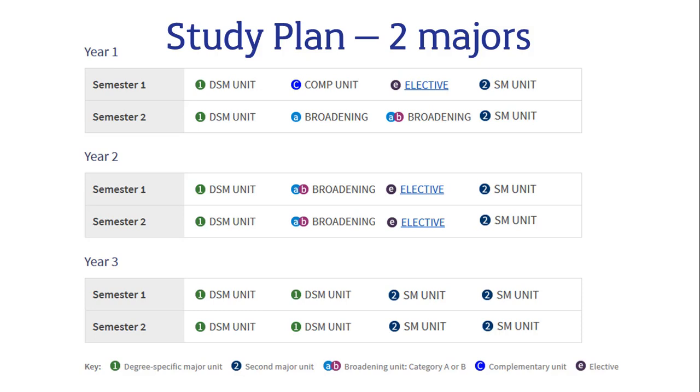In this second example study plan, the student is taking a degree-specific major, shown in green, and a second major, shown in dark blue. Again, there is one complementary unit that must be taken as part of their degree-specific major. After including their four broadening units, this student will have room for three electives. Remember, these example study plans are a guide only. Every student's study plan will be different and unique to the choices that you make.